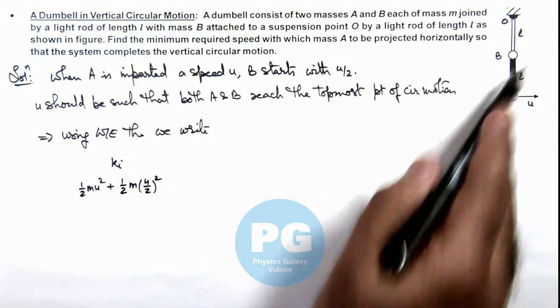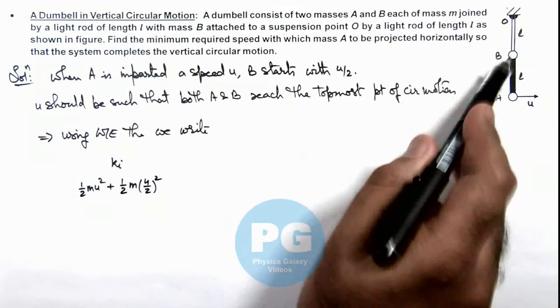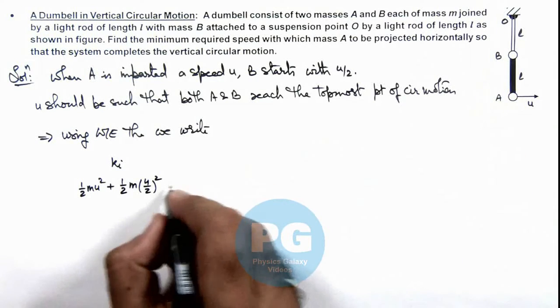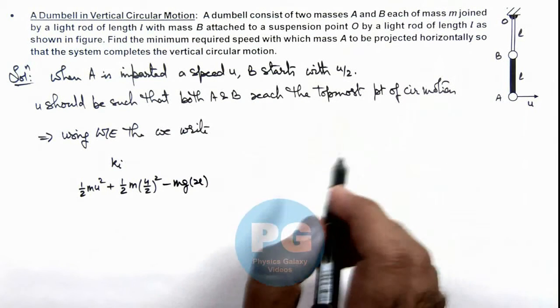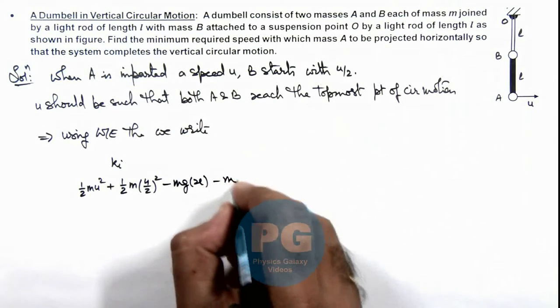And when they reach the topmost point, B will be raised by a length 2l, so this will be -mg(2l). A will reach to a height 4l, so this is -mg(4l).